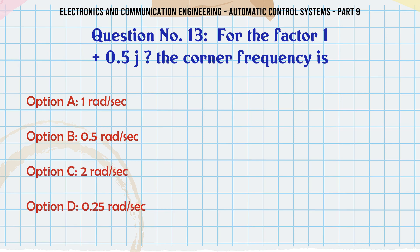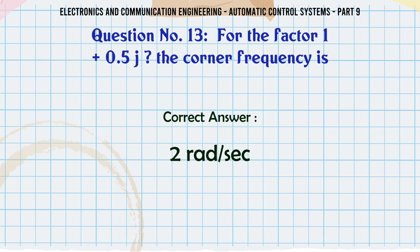For the factor (1 + 0.5jω), the corner frequency is: A. 1 rad/sec, B. 0.5 rad/sec, C. 2 rad/sec, D. 0.25 rad/sec. The correct answer is: 2 rad/sec.